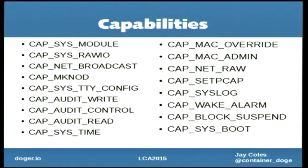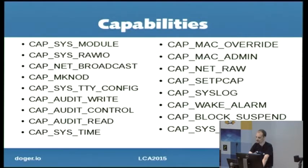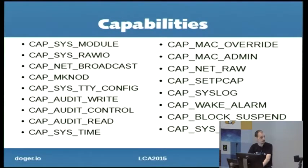So, capabilities. This is actually a list of capabilities that are not very useful in a container context. Capabilities were basically an attempt to cut down root into smaller bundles of authority that you could parcel out to both processes and files. Unfortunately, that backfired a bit — there's a capability known as CapSysAdmin that's heavily overpowered and is almost a god capability. These are capabilities you definitely don't want in a container.